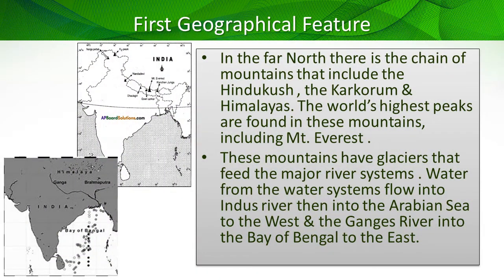The first geographical feature, which you can see on the map, is that in the far north there is a chain of mountains that include the Hindukush, the Karakoram, and the Himalayas. The world's highest peaks are found in these mountains, including Mount Everest. There are many high peaks in the upper stretches of the Himalayas, and Mount Everest is said to be the roof of the world because it is the highest peak not only of the Himalayas but of the world.